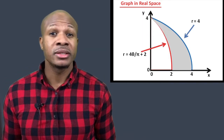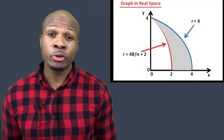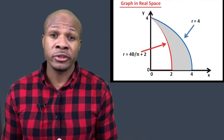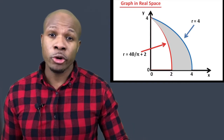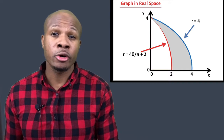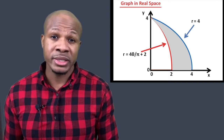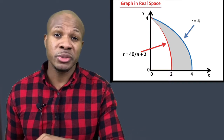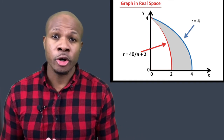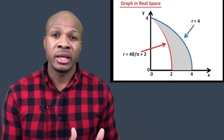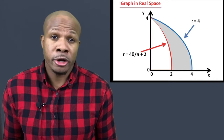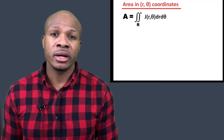When plotted in real space, r = 4 becomes a circle of radius 4, and since we're only in the first quadrant, it's a quarter circle. The function r = 4θ/π + 2 is no longer a straight line in real space — it's a curved equation. But that's fine, because we know how to calculate the Jacobian and convert an area in r-theta space into real-space area.